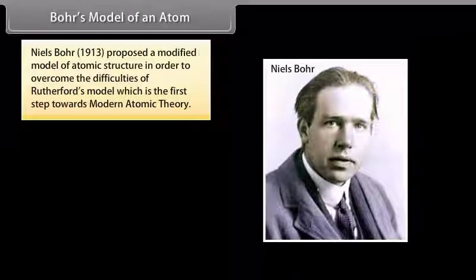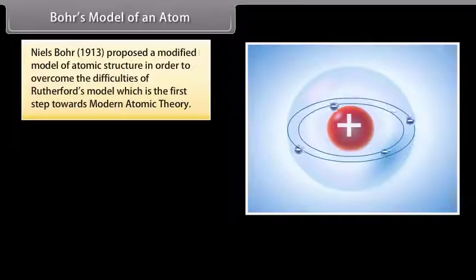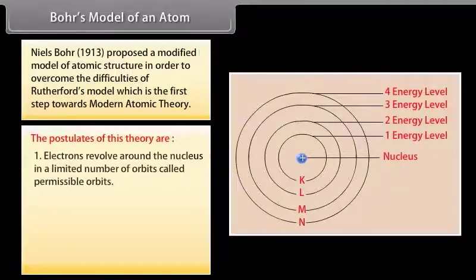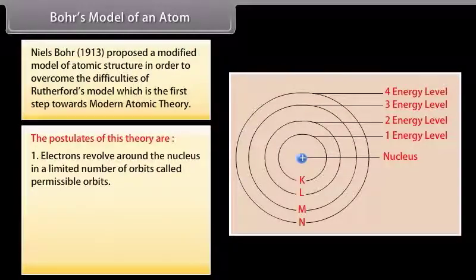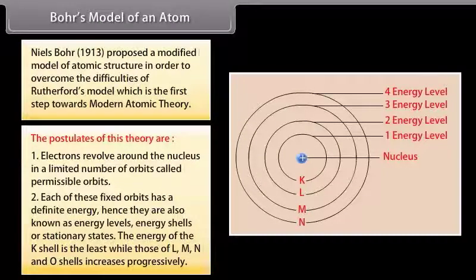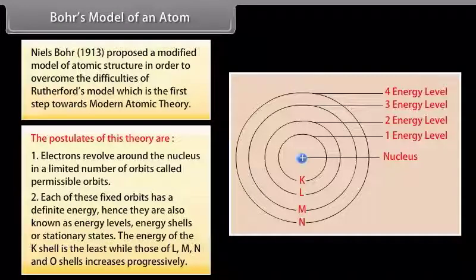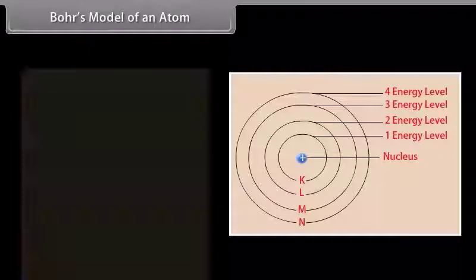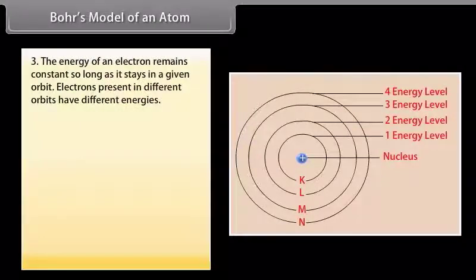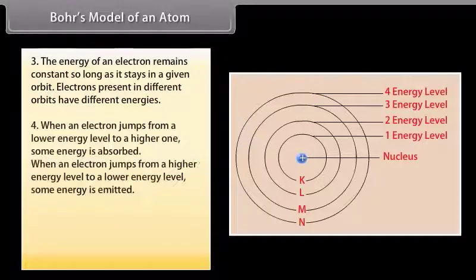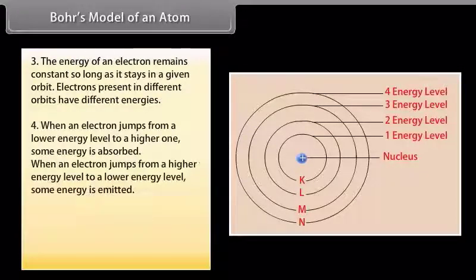Bohr's Model of an Atom: Niels Bohr in 1913 proposed a modified model of atomic structure to overcome the difficulties of Rutherford's model, which is the first step towards modern atomic theory. The postulates are: 1. Electrons revolve around the nucleus in a limited number of orbits called permissible orbits. 2. Each of these fixed orbits has a definite energy, hence they are also known as energy levels, energy shells, or stationary states. The energy of the K shell is the least, while those of L, M, N, and O shells increases progressively. 3. The energy of an electron remains constant so long as it stays in a given orbit; electrons in different orbits have different energies. 4. When an electron jumps from a lower energy level to a higher one, some energy is absorbed.